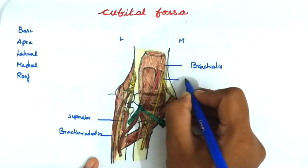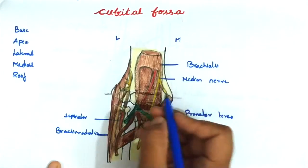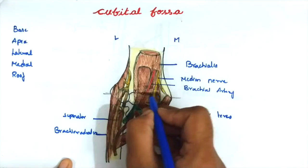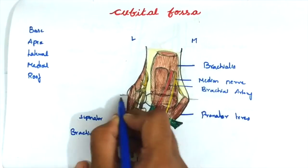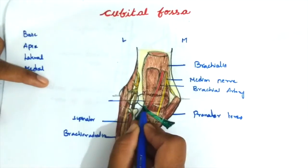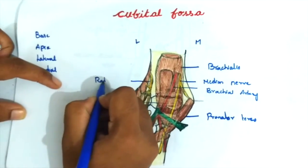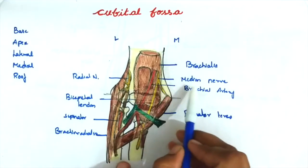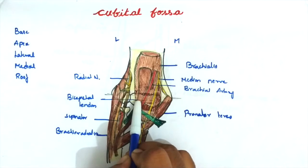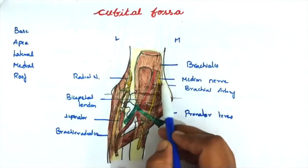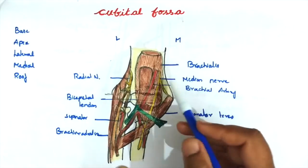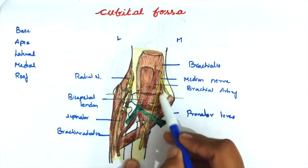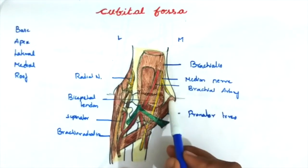The contents of the cubital fossa from medial to lateral are: the median nerve, the brachial artery, the bicipital tendon, and the radial nerve. We can remember these with the mnemonic M-B-B-R from medial to lateral. The median nerve passes downwards vertically and enters between the two heads of the pronator teres muscle.